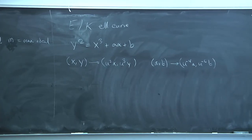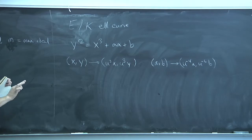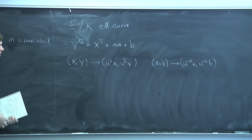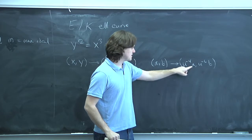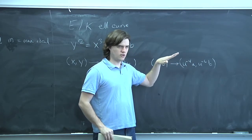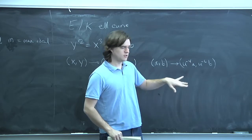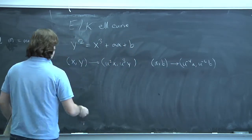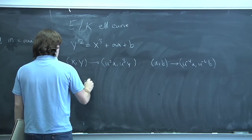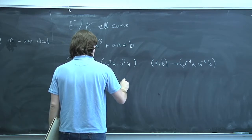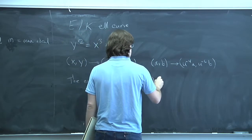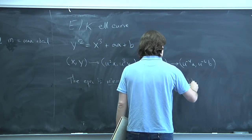You can always pick a u and scale up a and b so that they're in the ring of integers. It's natural to try to pick the optimal model in the ring of integers. If a and b are integers, and the valuation of b is ≥ 6 and the valuation of a is ≥ 4, then you can take u to be a uniformizer and move their valuations down. You keep doing this until one of those conditions is not true.